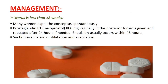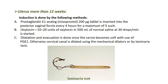Management: When the uterus is less than 12 weeks, many women expel the conceptus spontaneously. In medical management, misoprostol 800 mcg vaginally in the posterior fornix is given and repeated after 24 hours if needed; expulsion usually occurs within 48 hours. Suction evacuation is done as definitive treatment or when the medical method fails. When the uterus is more than 12 weeks, induction is done by prostaglandins, which are more effective than oxytocin. Misoprostol 200 mcg tablet is inserted into the posterior vaginal fornix every 4 hours for a maximum of 5 doses. Oxytocin 10–20 units in 500mL of normal saline at 30 drops per minute may also be started. Dilatation and evacuation is done once the cervix becomes soft, using mechanical dilators such as the Hegar dilator or laminaria tent.